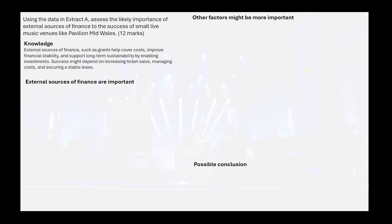We don't need a textbook definition. If you're struggling for definitions, go to the case study and have a look at what they're talking about. Grants are a source of finance - just describe the grant. You're going to demonstrate an understanding of this external source of finance. The examiner would not be asking you, in this question, to list all of them, but you need to demonstrate an understanding of an external source of finance which just happens to be grants. Such as: a grant helps cover costs, improve financial stability, and support long-term sustainability by enabling investments - I got that from the case study, really.